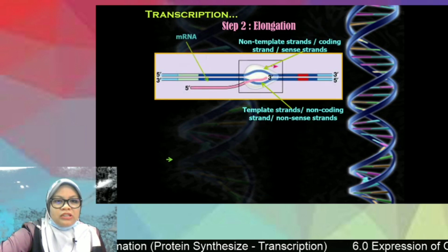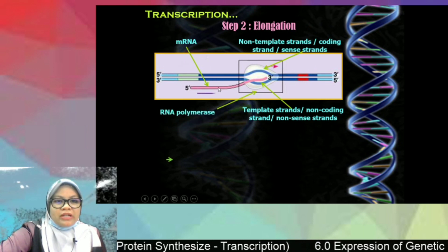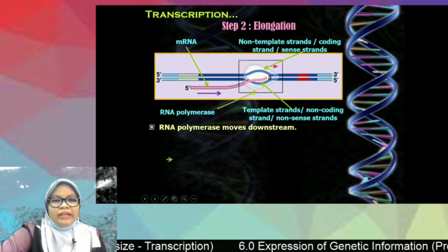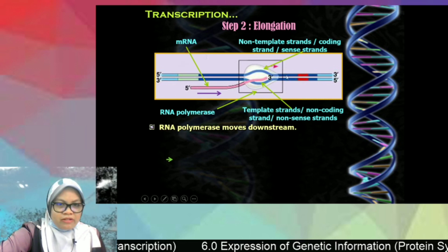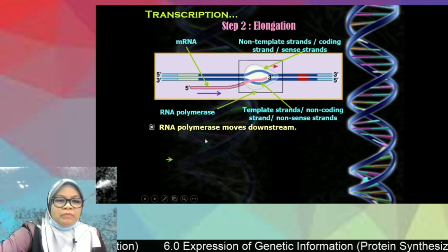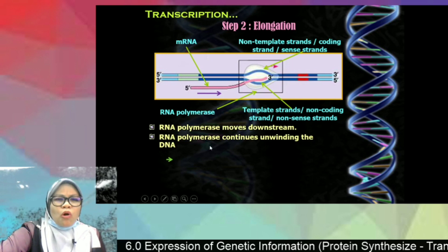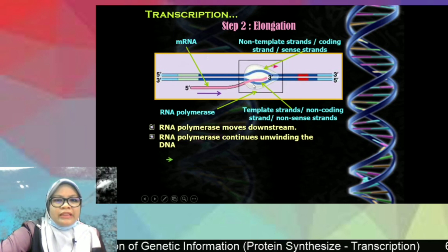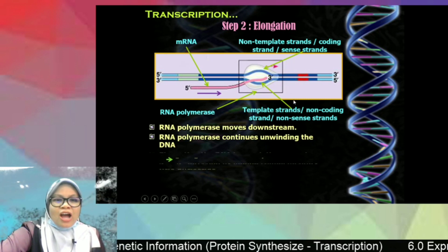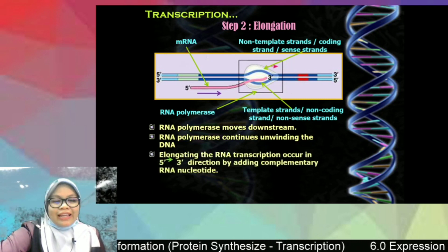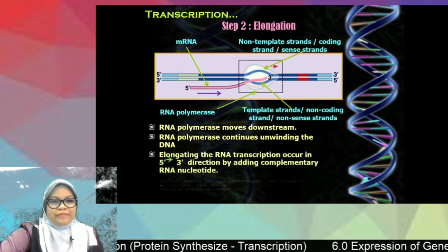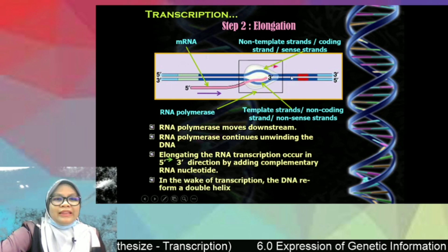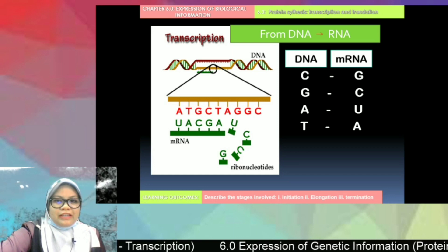In elongation, RNA polymerase continuously unwinds the DNA double strand, moving downstream and continuously transcribing the DNA template strand by adding complementary RNA nucleotides. This process continues until RNA polymerase reaches the terminator.